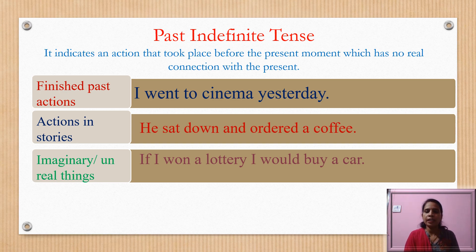Whenever we find words such as yesterday, last week, this morning, etc., we write the sentences in past indefinite tense. Whenever the time is important or when we want to mention the time, we use past indefinite. Otherwise, we can also use present perfect tense in place of past indefinite. For example, 'I have gone to the cinema.'